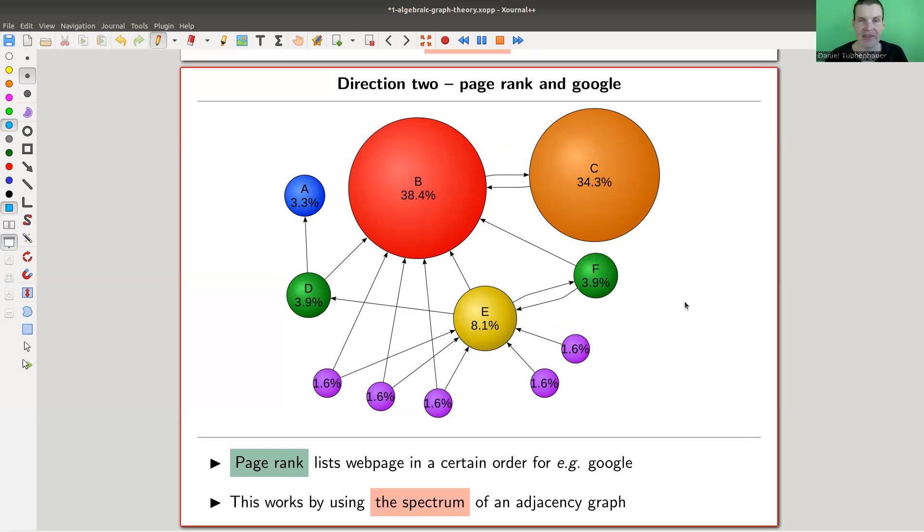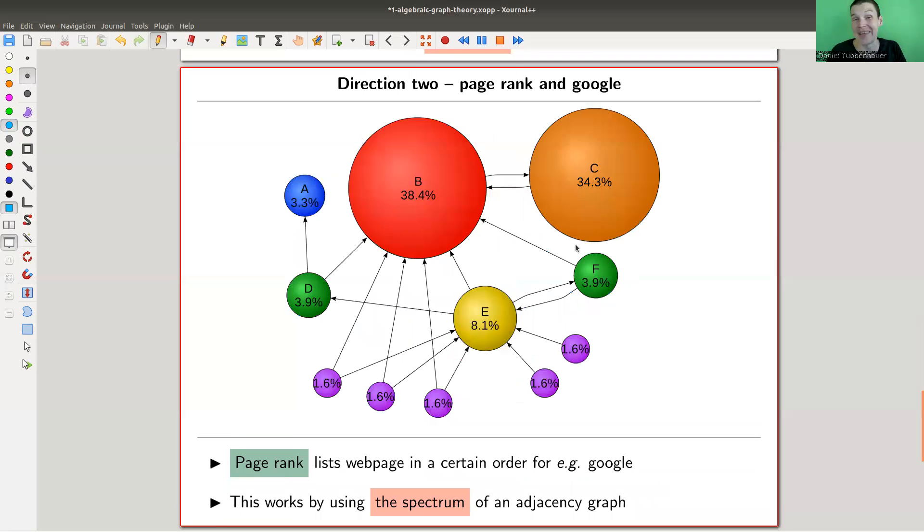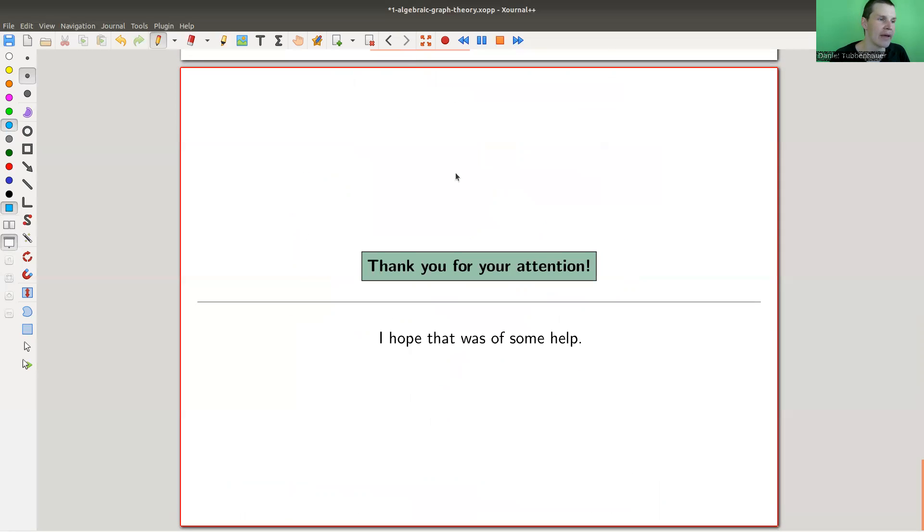The worldwide web is a graph. Then you apply algebra methods to study graphs. One of my favorite examples here. So it lists web pages in an order, the PageRank, and what it really uses is the spectrum. You use the eigenvalues of the adjacency matrix.